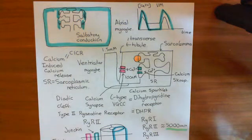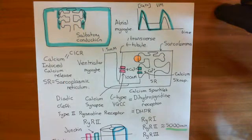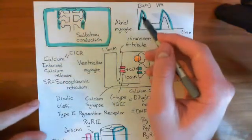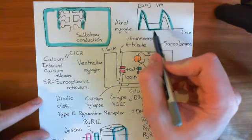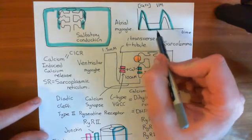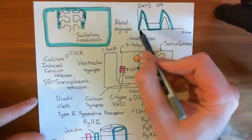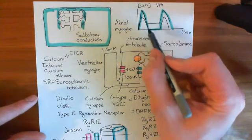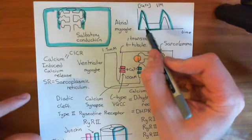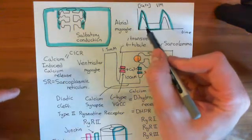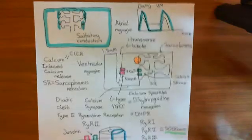Now that we've discussed how we're going to increase the force with which the heart contracts — by increasing the amplitude of calcium spikes while making sure the resting level of calcium does not go up — we want to discuss how we're actually going to increase the size of these calcium spikes in response to beta-adrenergic stimulation that comes from the sympathetic nervous system.